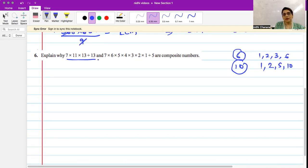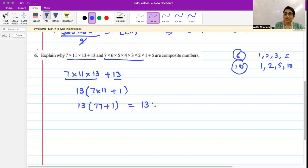In this question, we need to explain why these numbers are composite. In the previous video, we also showed that composite numbers can be written as the product of prime numbers. So let's first take this number: 7 × 11 × 13 + 13. Now this is 13(77 + 1), which gives you 13 × 78.